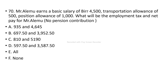Next question. Mr. Adam will earn a basic salary of Birr 6,000 and a transportation allowance of 500, plus a position allowance of 1,000. What will be the employment income tax and net payment for Mr. Alemu? Assume no pension contribution. Basic salary is 6,000; transportation allowance and position allowance are also noted.